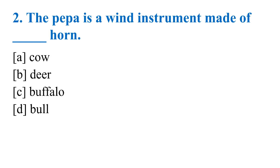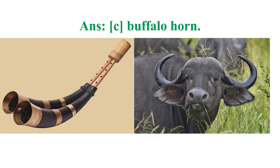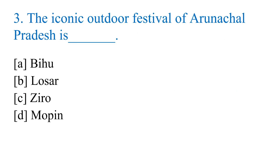Question number 2: The Pepa is a wind instrument made of — option A: cow horn, option B: deer horn, option C: buffalo horn, option D: bull horn. Quickly write down the answer. All of you have given the right answer — the correct answer is option C: buffalo horn. Here you can see a picture of Pepa and it is made of buffalo horn.